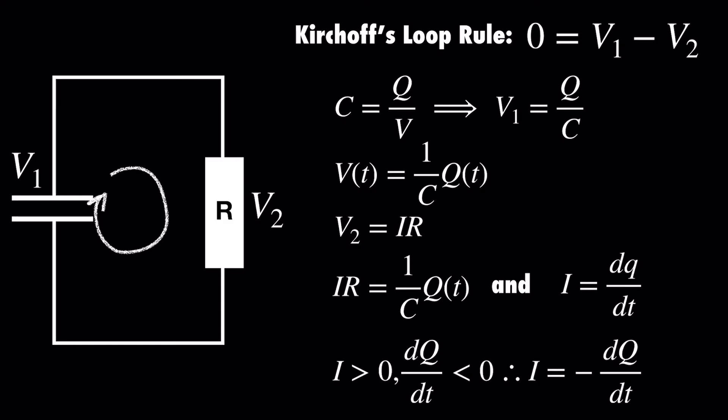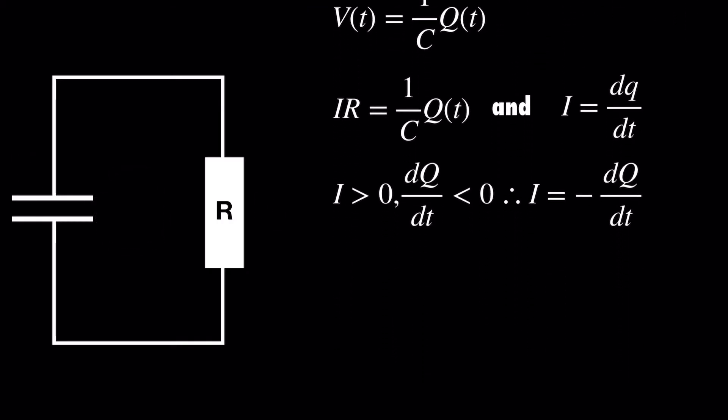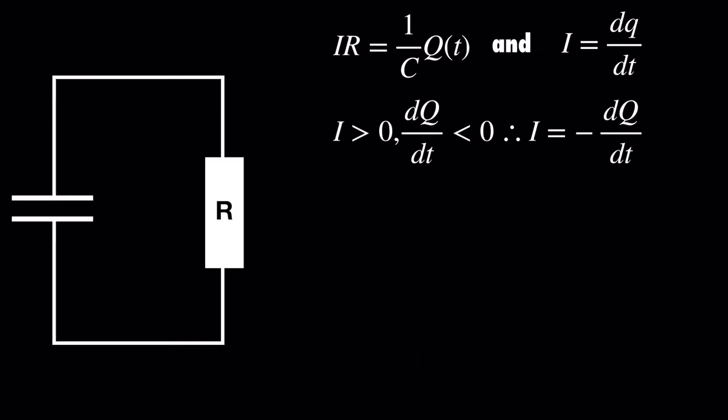Now, we substitute our derivative form of the current into our equation, and maybe you can see what's coming. We've now got a separable differential equation, and so that's relatively straightforward to solve.